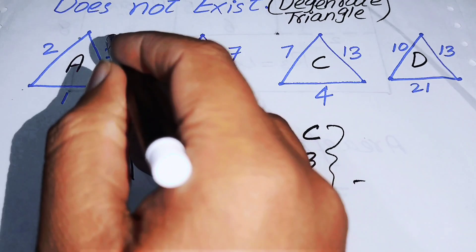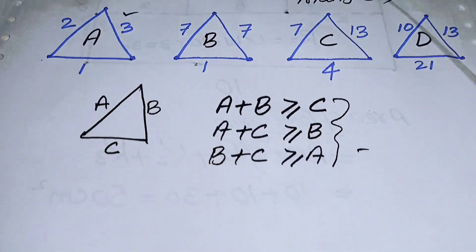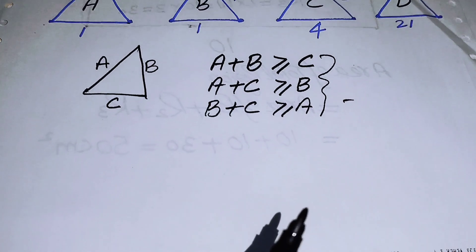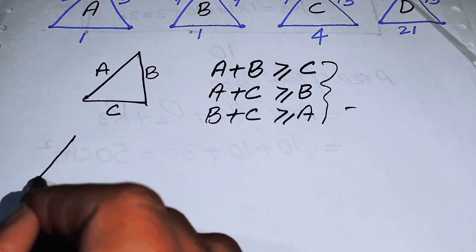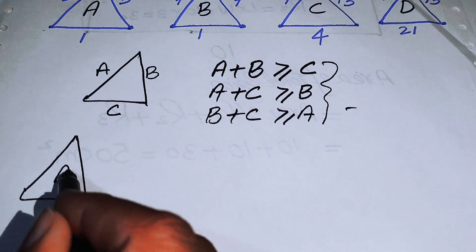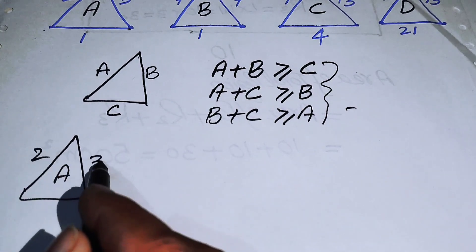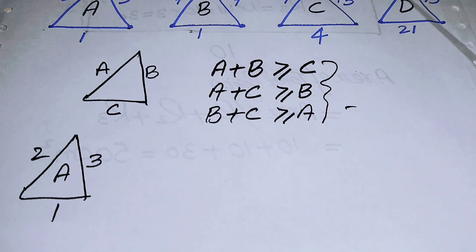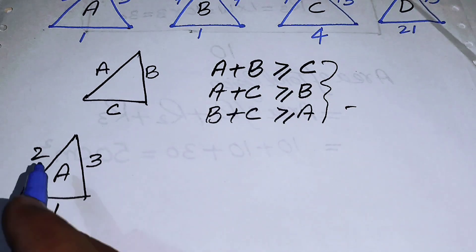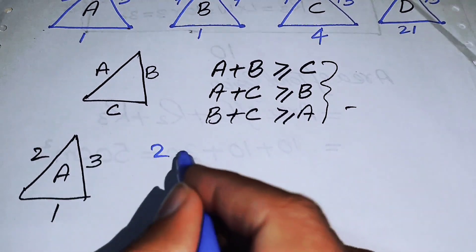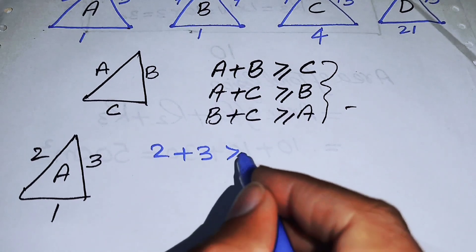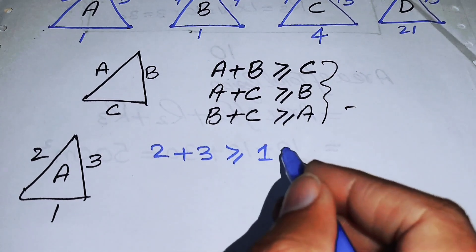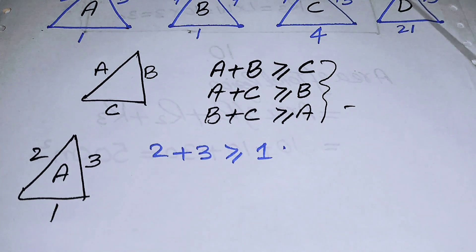Now we discuss triangle A, which has side lengths 2, 3, and 1. Checking the relation: 2 + 3 = 5, which is greater than or equal to 1, so that condition holds. We now introduce the degenerate triangle.